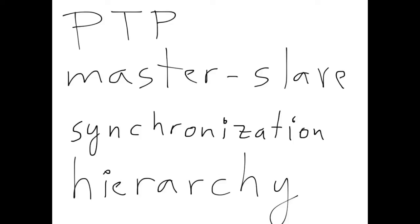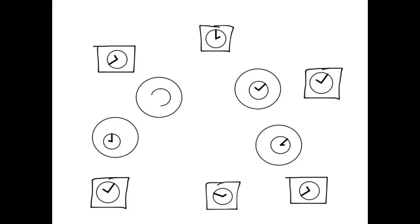Something that is essential to understand PTP is that it establishes a master-slave synchronization hierarchy. Consider a set of ordinary clocks as well as some boundary clocks, and perhaps also a transparent clock and an ordinary switch. Let's assume that they are interconnected to form a network.